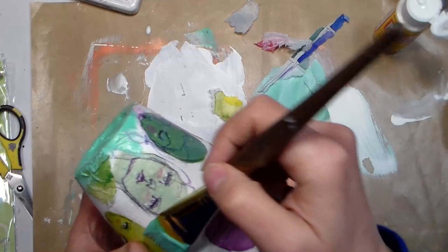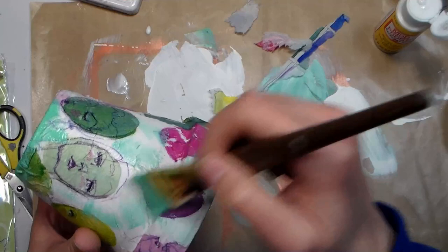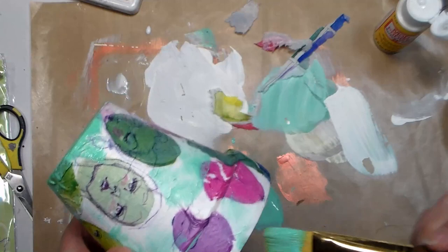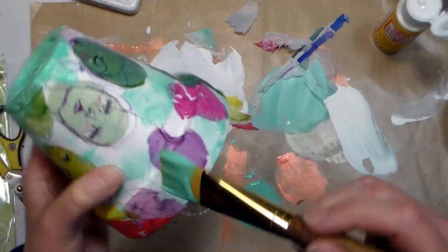After your decoupaging is dry, you can take some of the accent color and you can kind of fill in a little bit. If you have texture or ridges in areas, you can kind of pick that up with the edge of your brush. I would try not to overdo it, because you don't want to cover up all of the cool patterns on the tissue, but it does just tie that color in a little bit more.